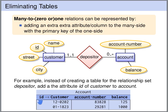Every row in the account table represents one account. If we want that every account is linked to precisely one customer, then we have to declare this column as not null. This translation in principle also works the same way if we have a many to zero-or-one relationship set. If we want to include the possibility that an entity of the many side is linked to zero entities, then we do not declare this column as not null. Then we allow null, and if we fill null, then this entity is not linked to any entity on the other side.